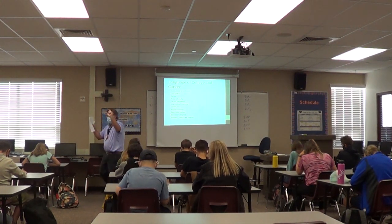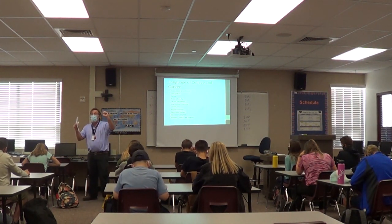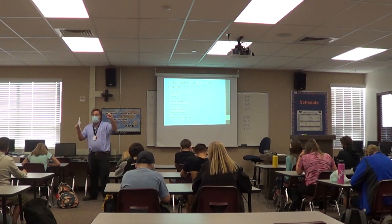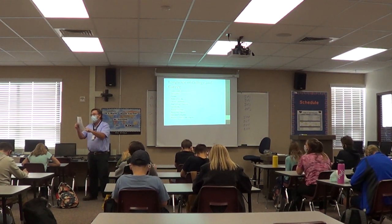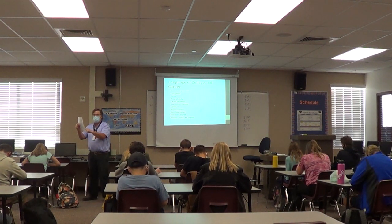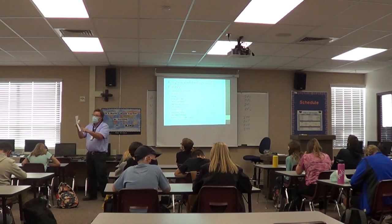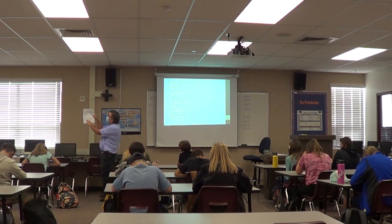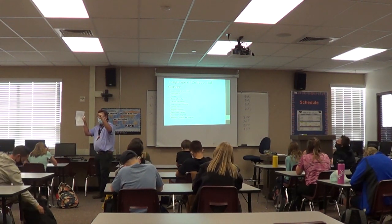Whatever number is circled going across, you're going to add those numbers up. So let's say I circled number 1, 7, and 13 — I would add that, and that equals 21. Then on the left side where it says 'Realistic,' there's that little space — you put the number 21.